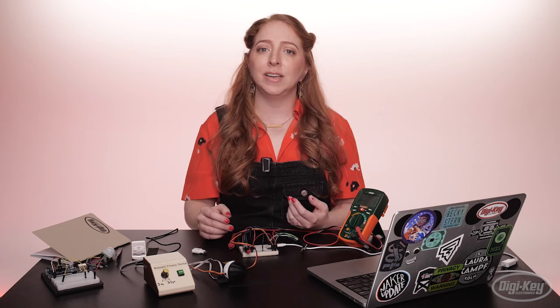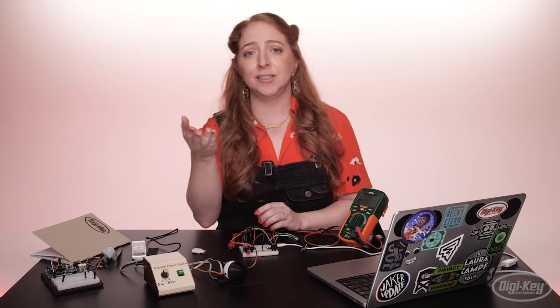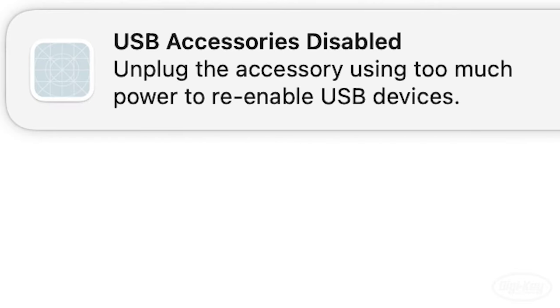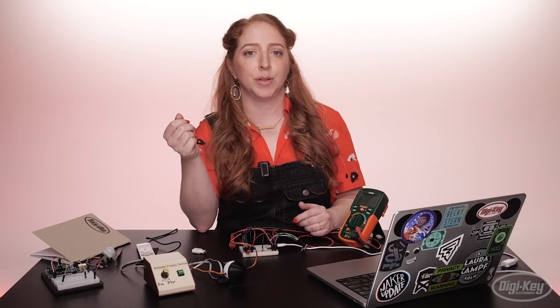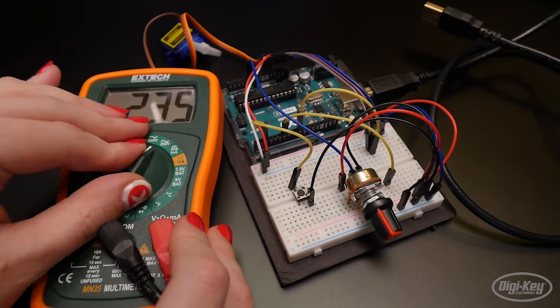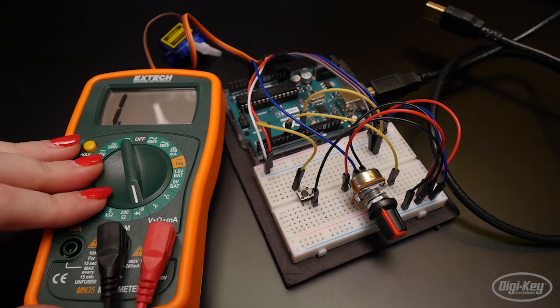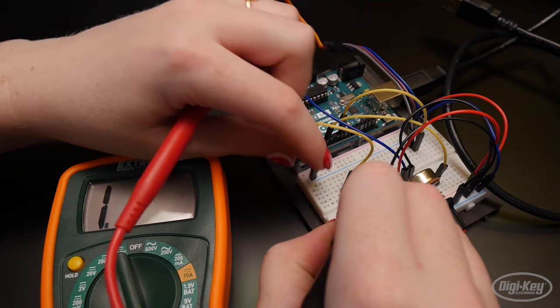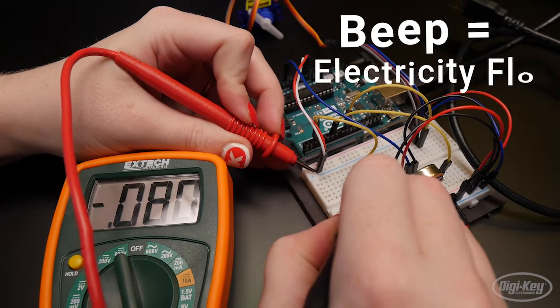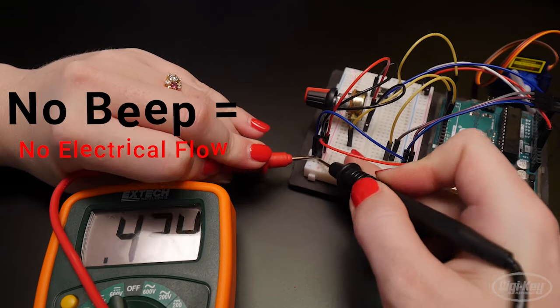The third problem you're likely to have is that your program compiles and uploads, but it just doesn't do what you want it to do. Double check that the pin number you specified in code is the same pin number connected to your device, and double check your power and ground especially. If you have shorted power and ground, your computer will detect the current draw and protect itself by shutting power off to the USB port. You'll usually get a warning about a device using too much power, and you may not be able to use this USB port again until you restart your computer. To troubleshoot your wiring, be sure your circuit is unplugged from power and set your multimeter to continuity mode.